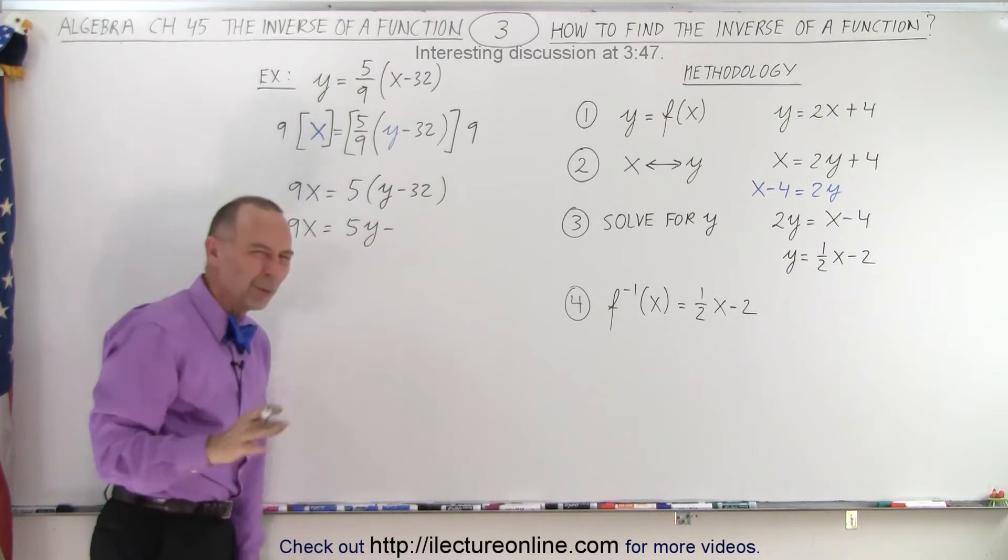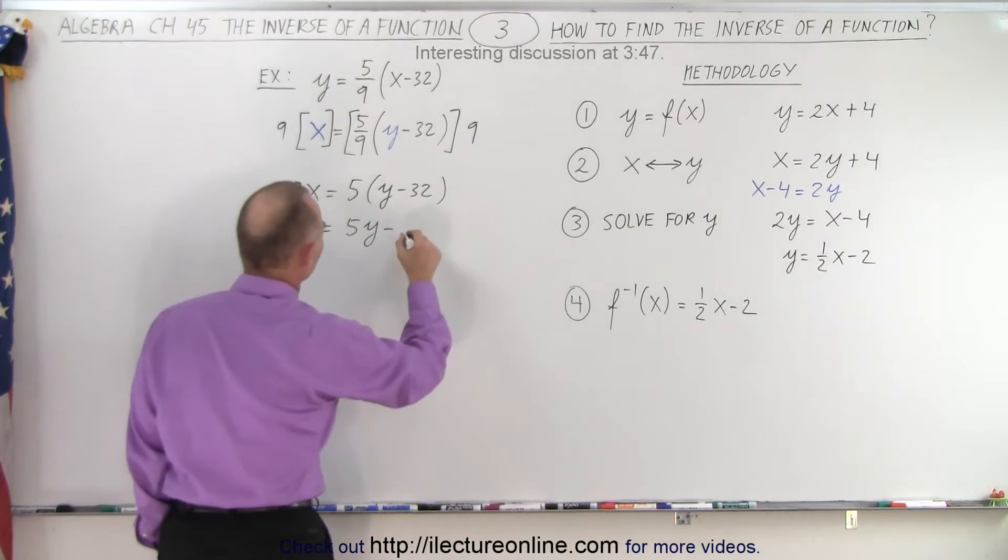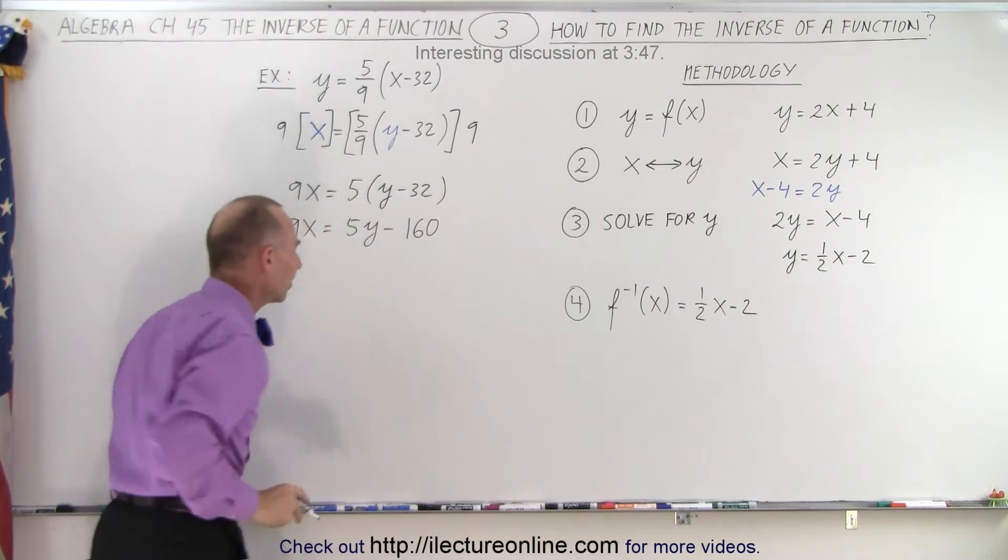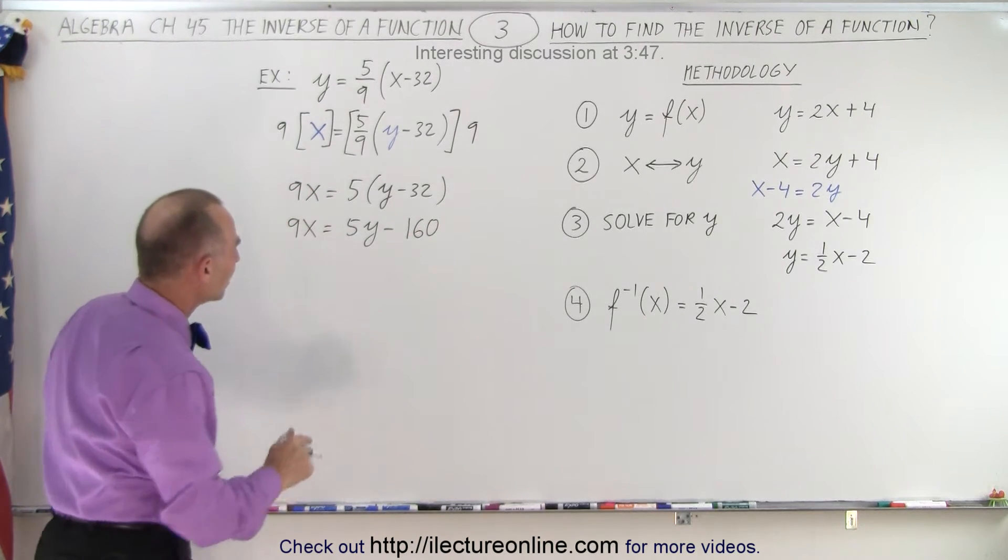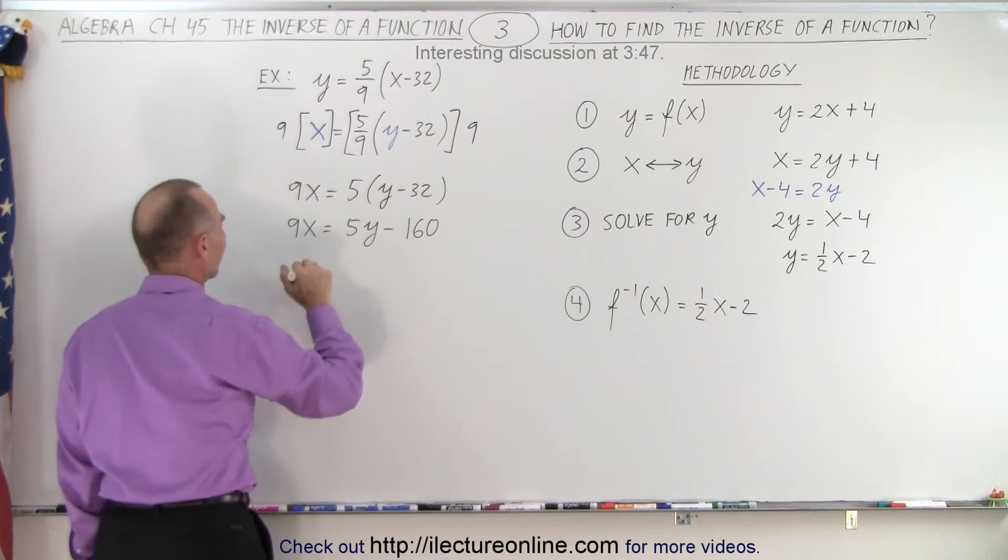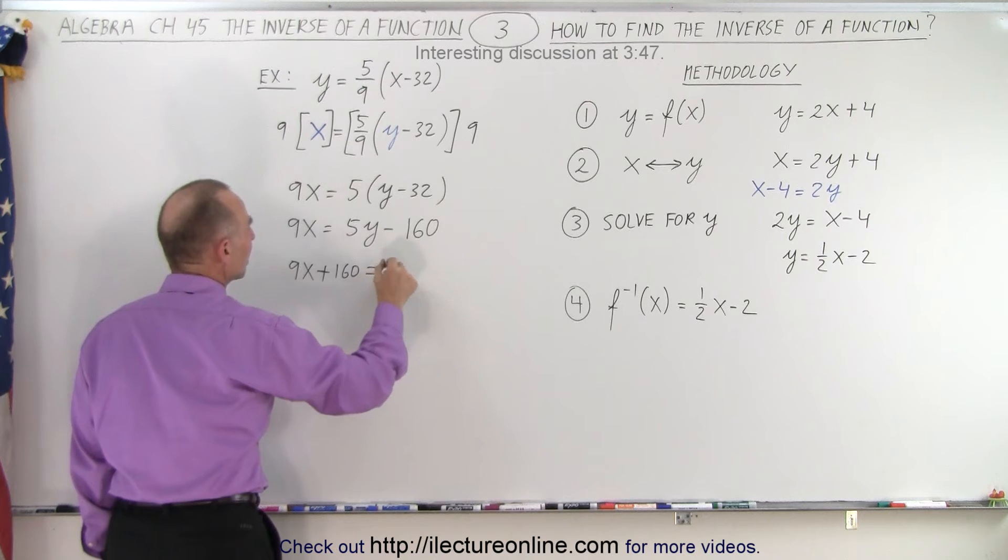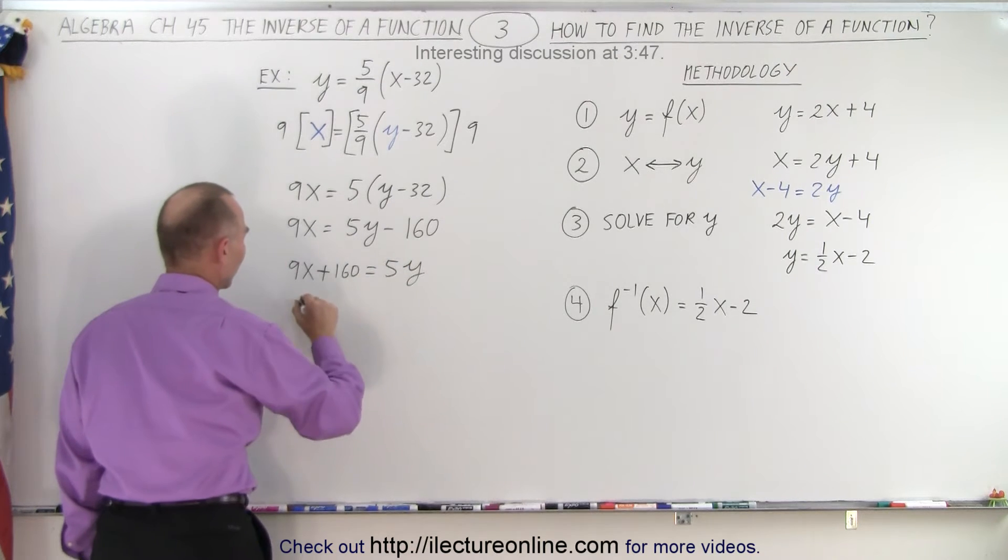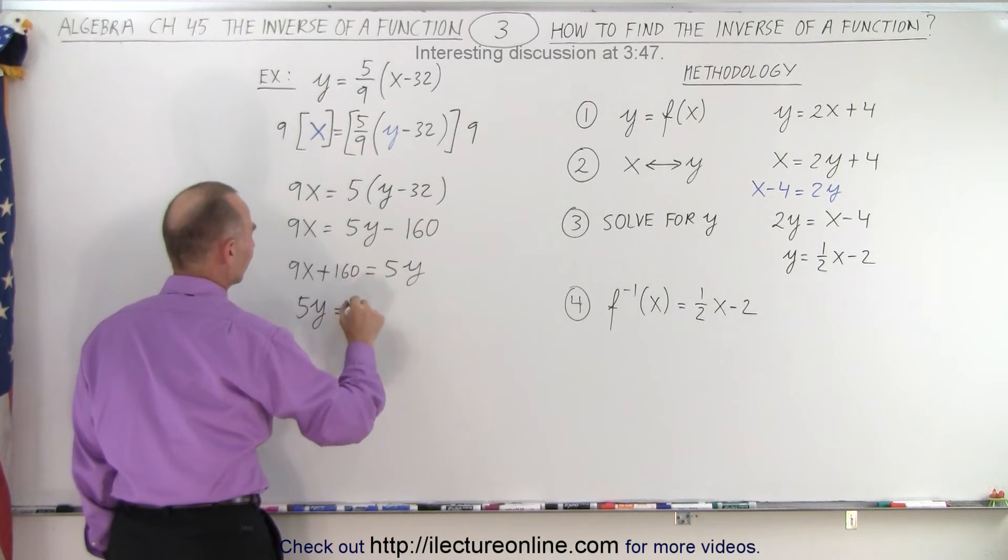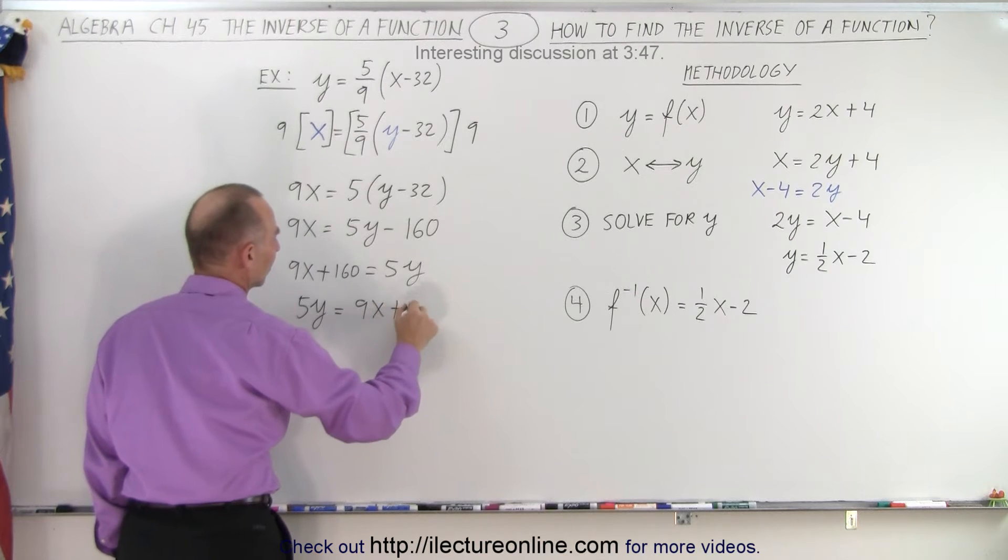For a moment there something was wrong, but I'm on the right track. And so now what we need to do is bring the minus 160 to the other side. So we end up with 9x. That becomes now plus 160 equals 5y. So now we have 5y is equal to 9x plus 160.